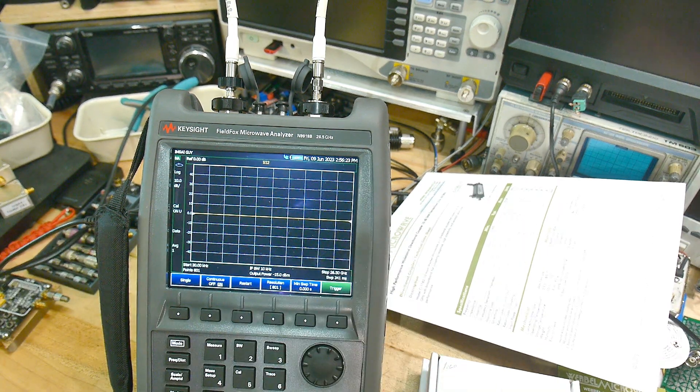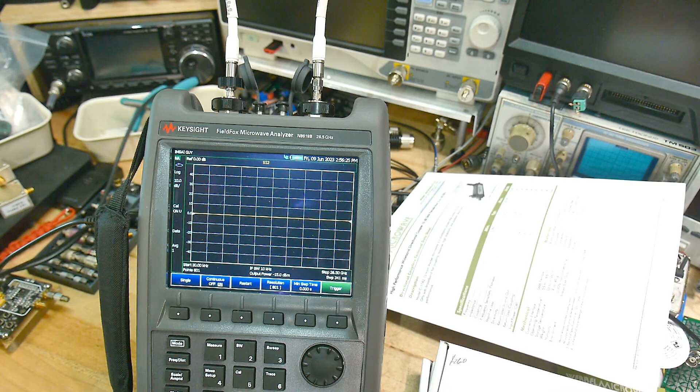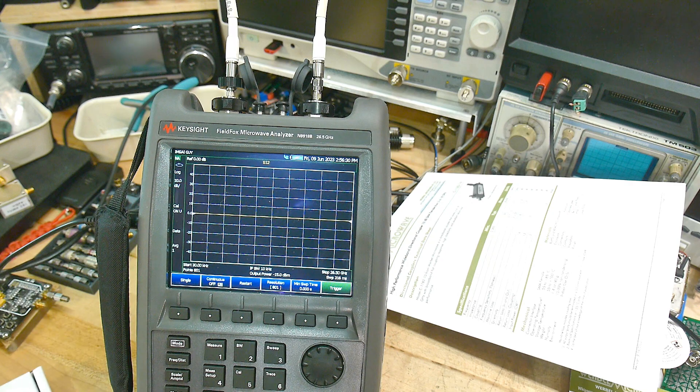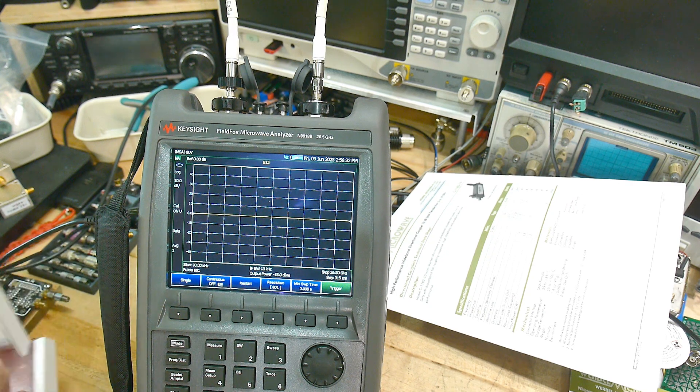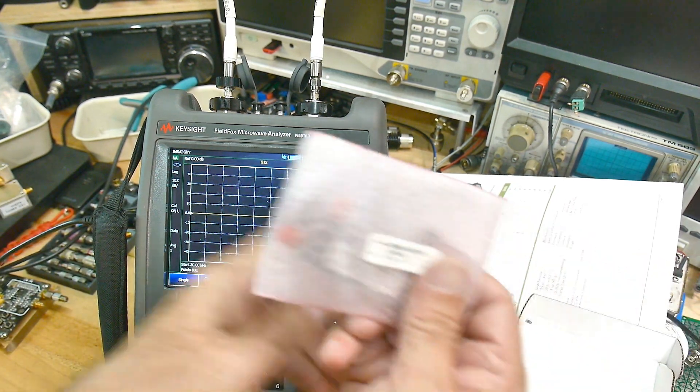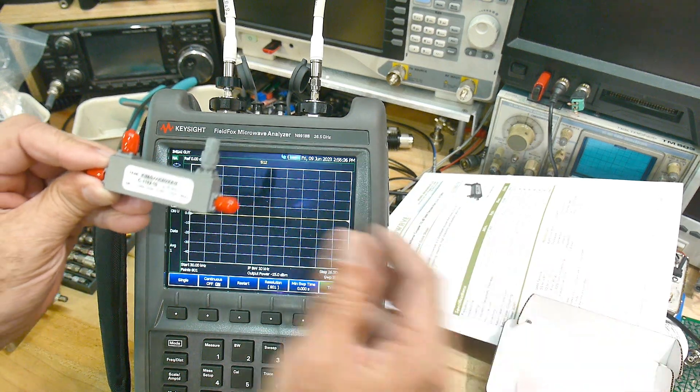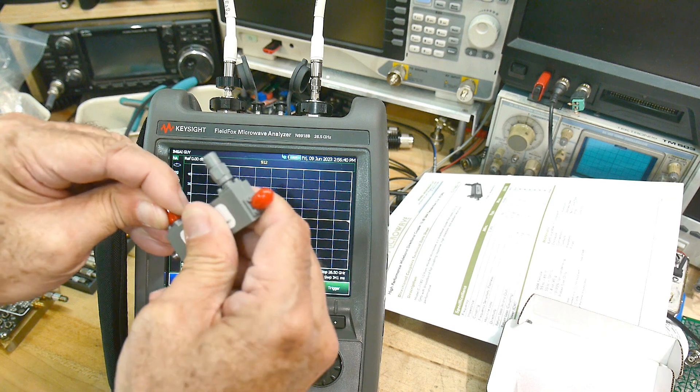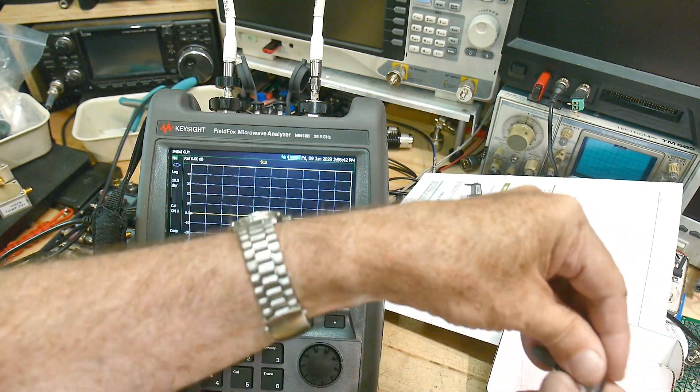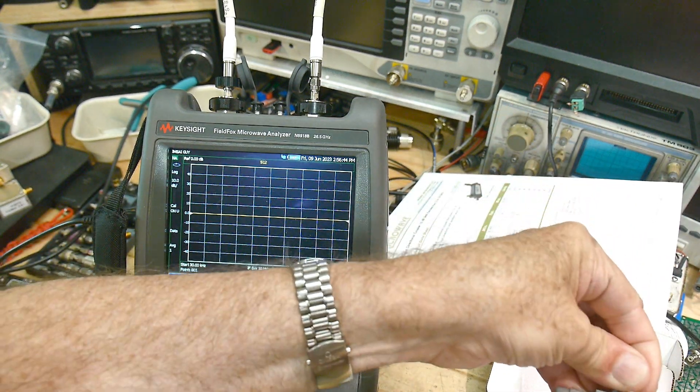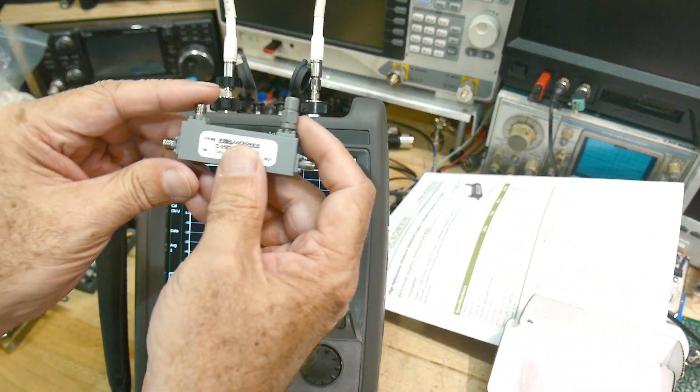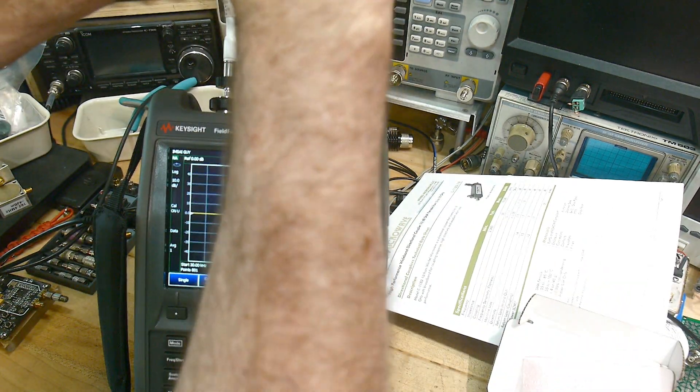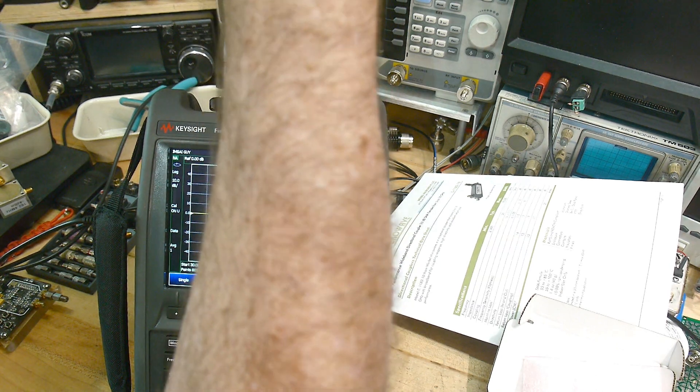All right, so now we have a nice flat cal. Let's go ahead and measure the coupler. It's much more interesting, so it comes in a little package, got the little reindeer noses on it. All right, and there we go. Cute little guy. All right, so let's disconnect our through.